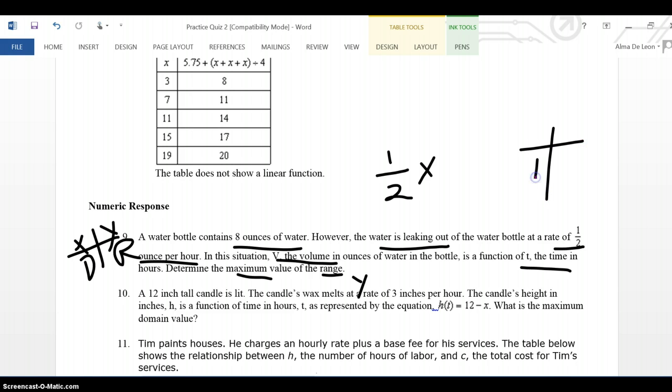After 1 hour, how many ounces of water are in the bottle? Well, I have 8 ounces of water. And after 1 hour, I know that half of an ounce is going to leak out. So after 1 hour, I have 7.5 ounces of water left in the bottle.